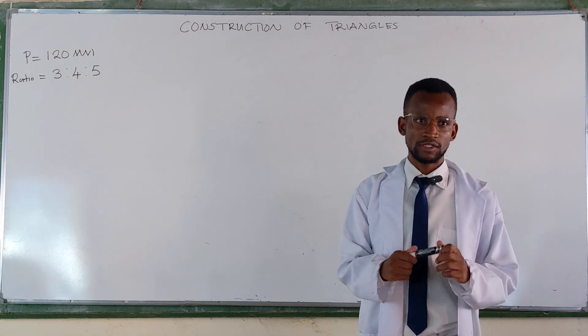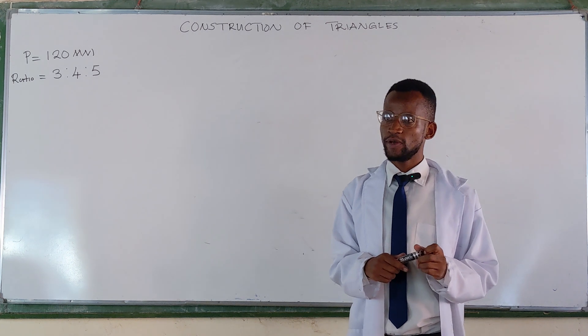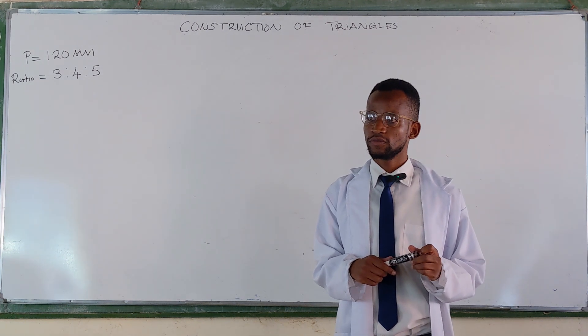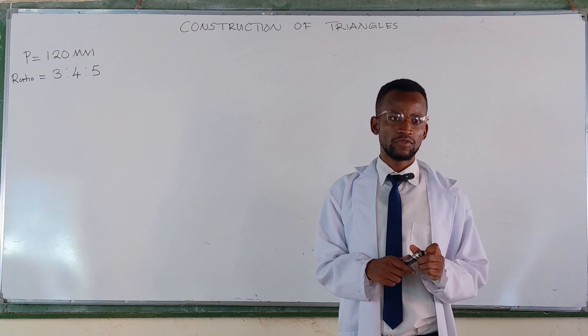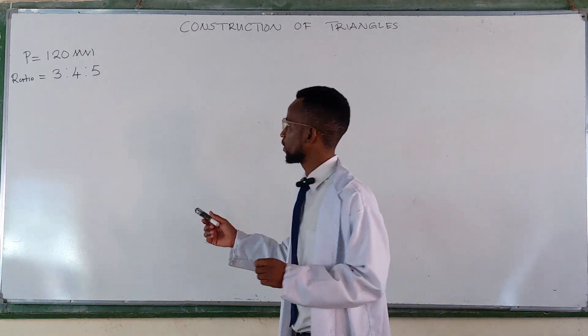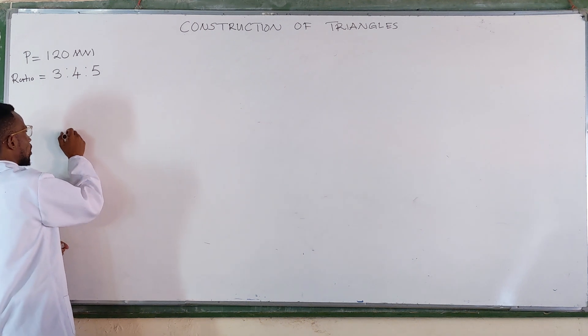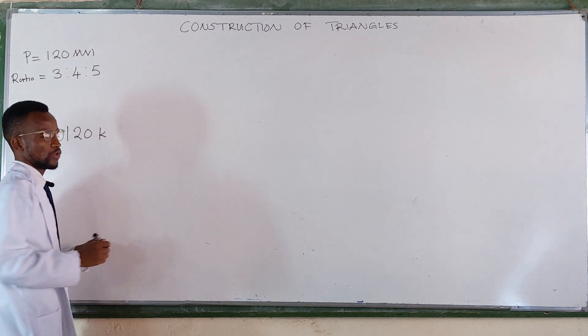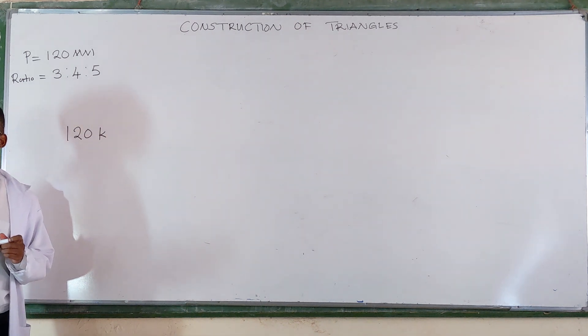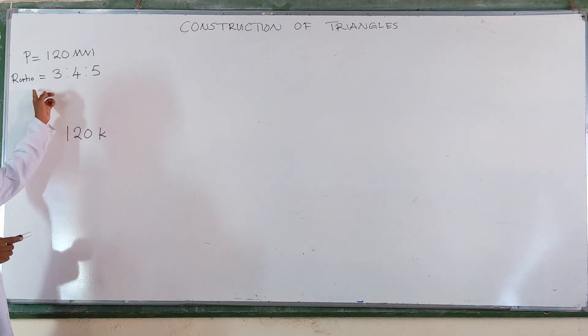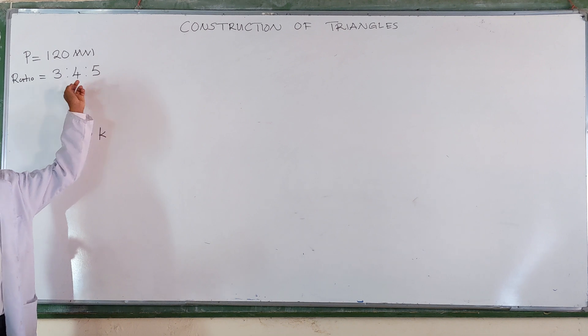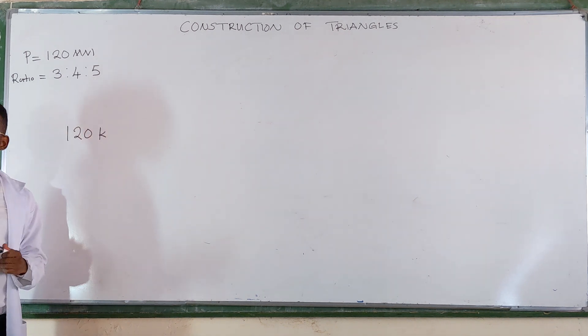From your mathematics, ratios and proportions, you remember how to do ratios and proportions? If you have been given, for example, 120,000, 120K like this, and then you have been taught to divide it according to this ratio, what do you do first?